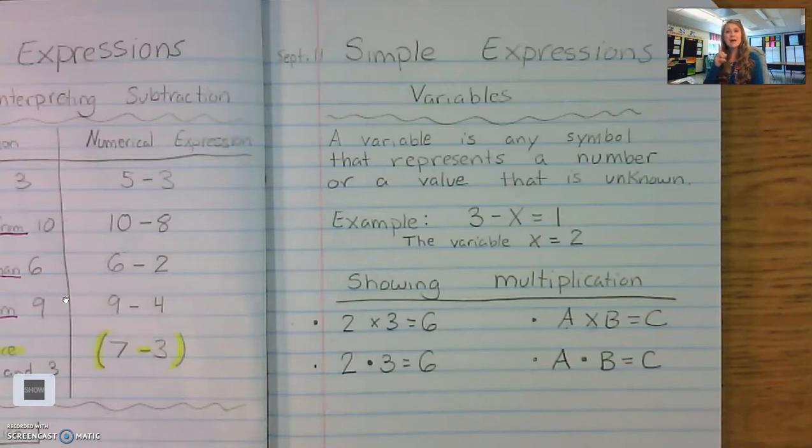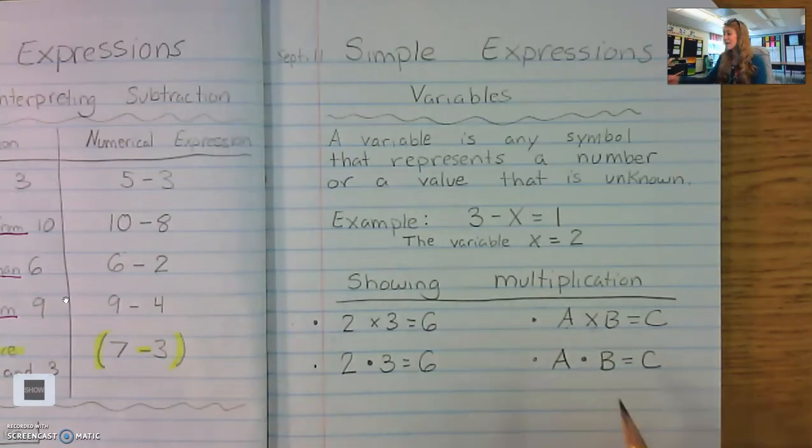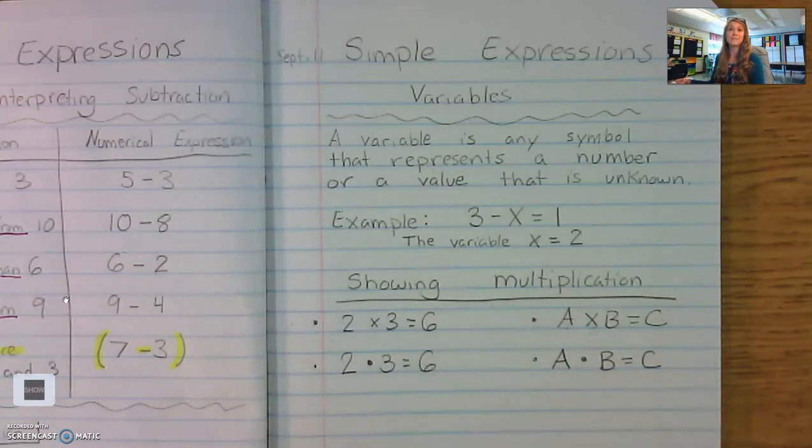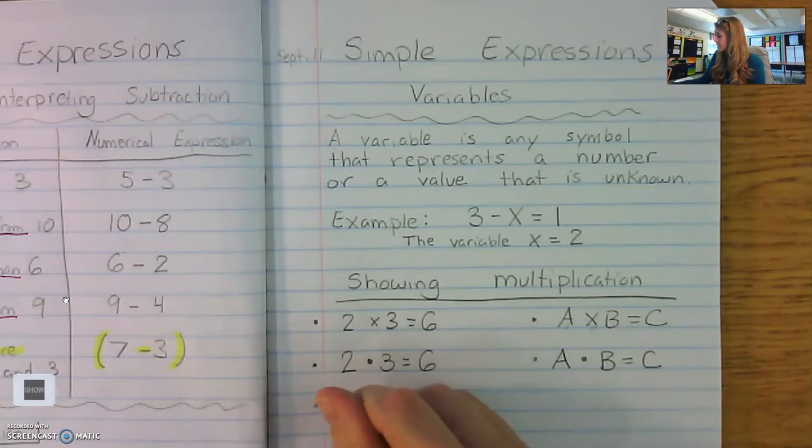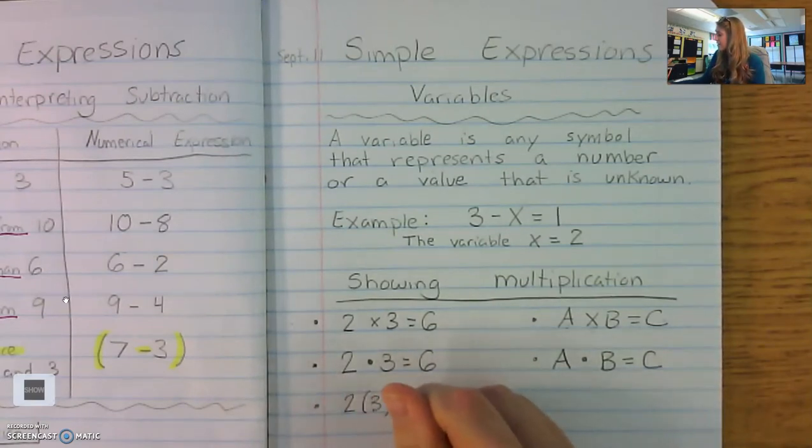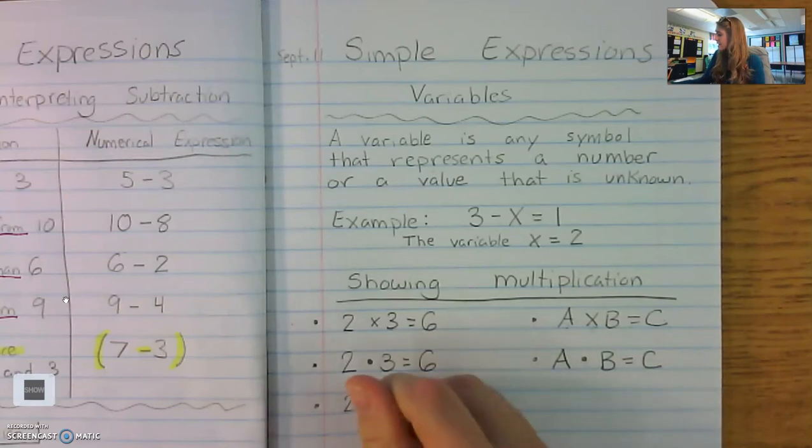But sometimes people get that confused. They might think it's a decimal. In fact, did you know that in other countries that's where they put the decimal, is in the middle of the number, not at the bottom? It's true. So the mathematicians had to come up with another way to represent multiplication. And here's what they came up with. They said, let's just take the symbols out all together.